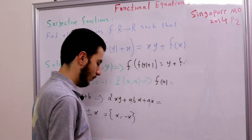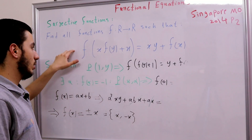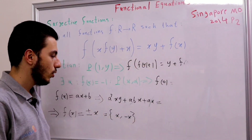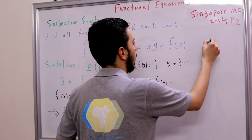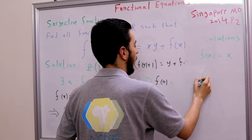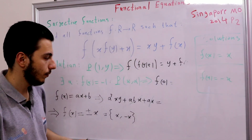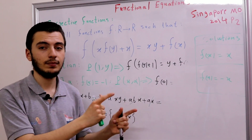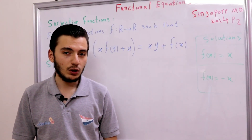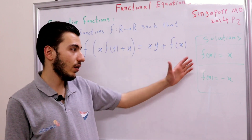Let's check whether they are solutions. For f(x) = x: x·y + x = xy + x ✓. For f(x) = −x: (−x)(−y + x) = x·y − x ✓. So they are indeed solutions. But — you guessed it — this is a pointwise trap, and remember pointwise traps are never a good place to stop. So let's actually prove that our function f is either x or −x for all real numbers.